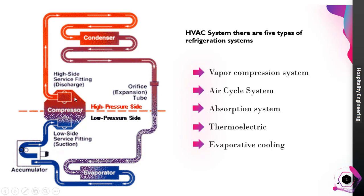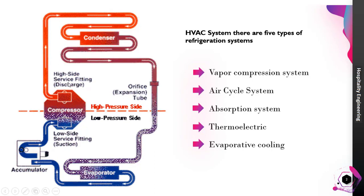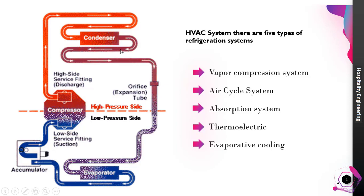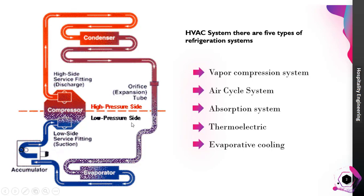The main component of the Vapor Compressor System is the compressor. The compressor is the heart of the system. It receives the low-temperature, low-pressure refrigerant and compresses it to high-pressure, high-temperature refrigerant, which goes to the condenser. In the condenser, condensing is happening — a high-pressure, high-temperature gas condenses into a high-pressure, high-temperature liquid. The liquid then moves to the expansion tube or expansion valve, where the pressure is reduced.